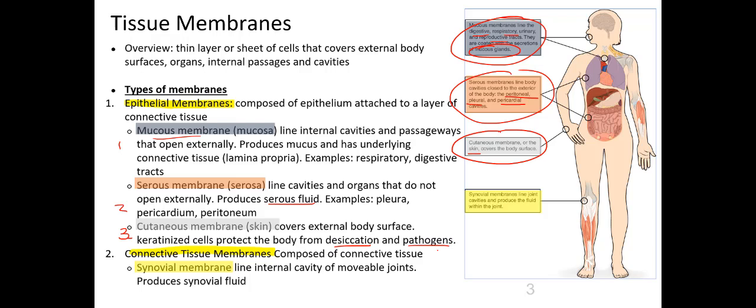Those are the three different types of epithelial membrane. Looking at the connective tissue membrane, there is one type: the synovial membrane. The synovial membrane lines most of the joints found in the body. It lines the synovial joint and produces fluid within it in order to help most of the joints in our body move around freely.